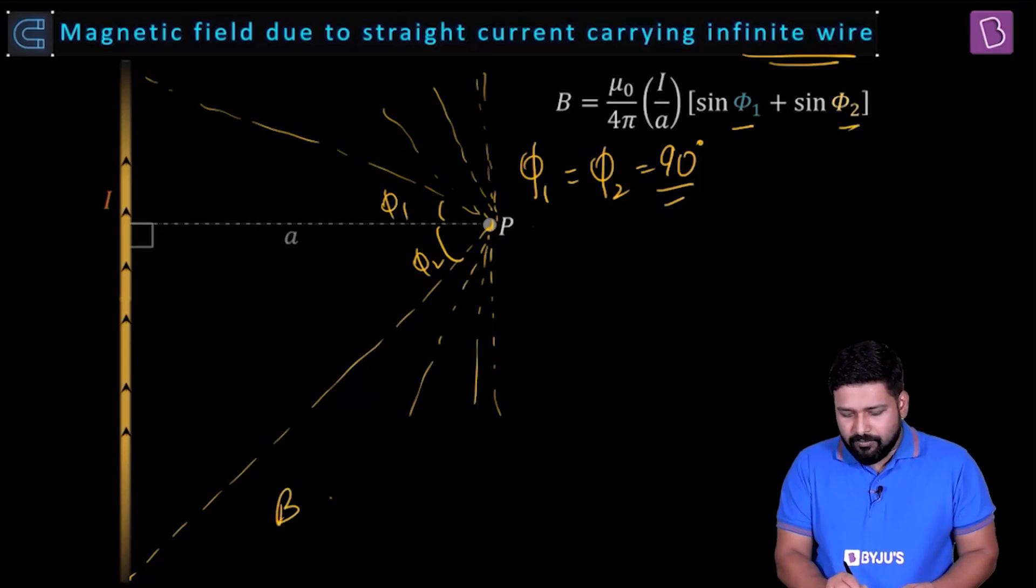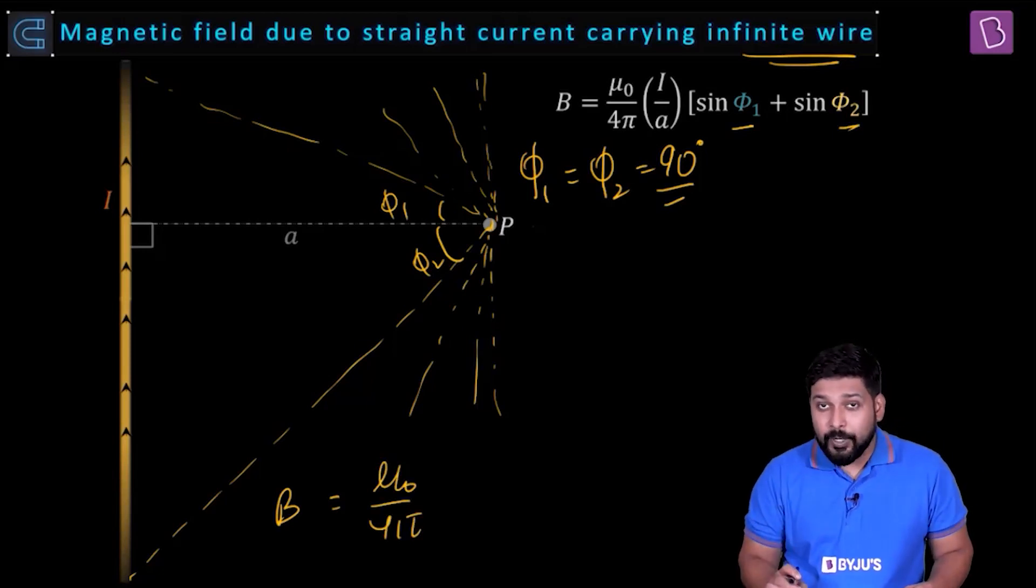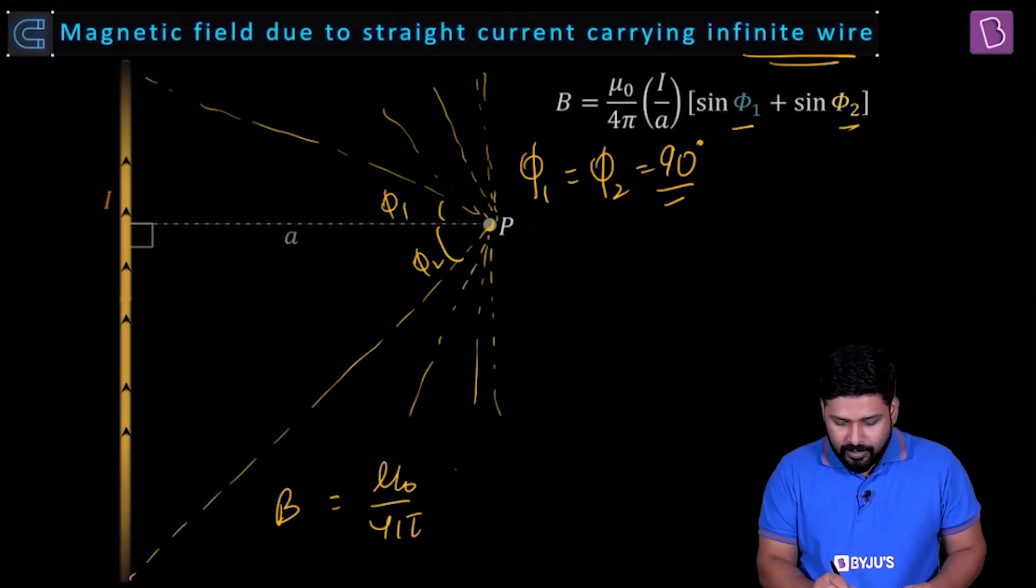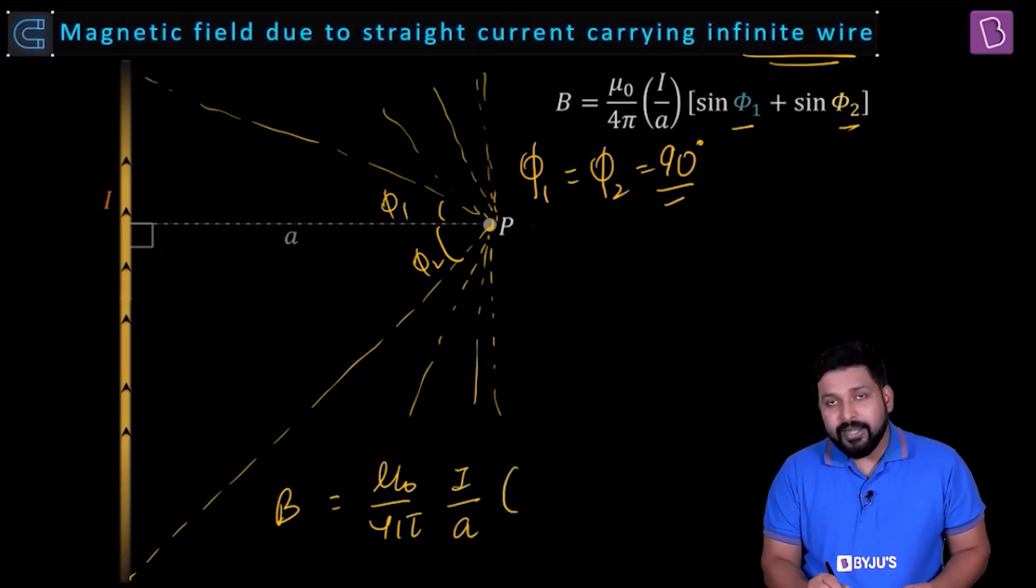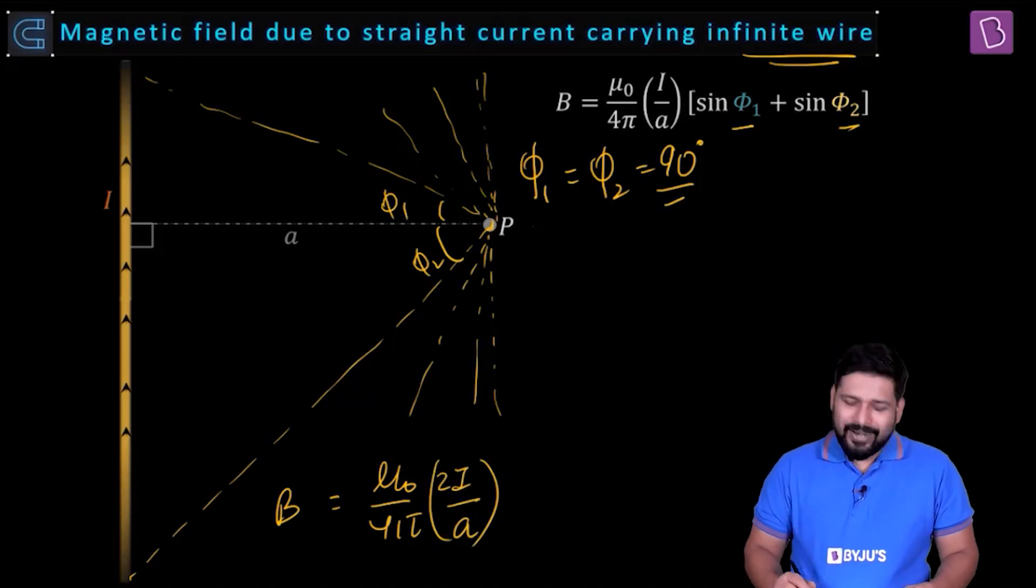So what will be the refined formula? B will be equal to μ₀ by 4π. We know that when you have got an infinite wire carrying current equal to I, then this will be equal to I by a and this will give you sin 90 plus sin 90. That is 1 plus 1, that is going to be equal to 2, or I can just club this over here. So you get 2I by a.